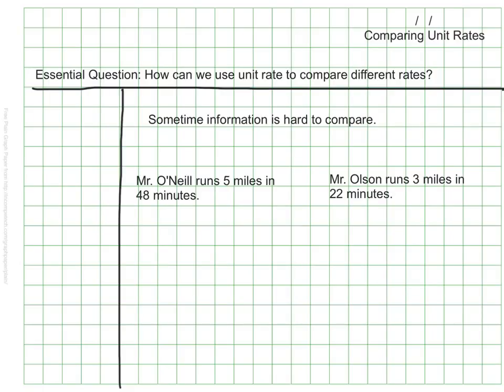Let's assume that Mr. O'Neill can run 5 miles in 48 minutes and Mr. Olson runs 3 miles in 22 minutes. Our job is to figure out who is a faster runner. Right now we are trying to compare two different mile amounts and two different time amounts. That makes it really hard to know immediately who is the faster runner.